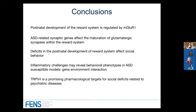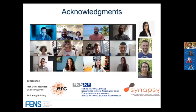In conclusion: the postnatal development of the reward system is regulated by mGluR1, and ASD-related synaptic genes may affect the maturation of glutamatergic synapses within this system. Deficits in postnatal development of the reward system may affect social behavior. Inflammatory challenge may reveal behavioral phenotype in ASD-susceptible models, proving the hypothesis of gene-environmental interaction. TRPV4 may be a promising pharmacological target for social deficits related to psychiatric disorder. This work was done by Stamatina Zanulino, Stefano Muzardo, Alessandro Contestabile, and Sebastiano Barrizelli — now a postdoc at NIH. Thank you.